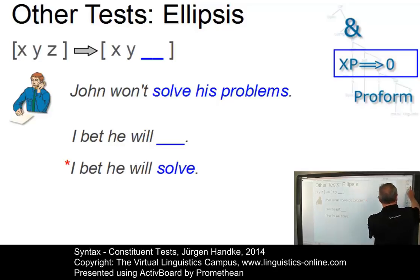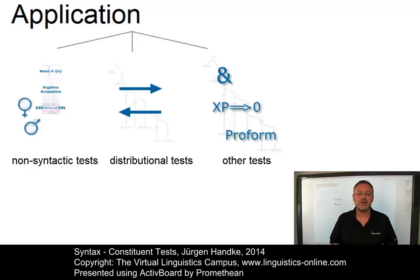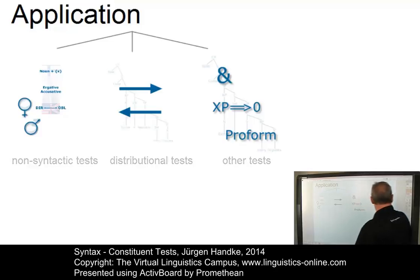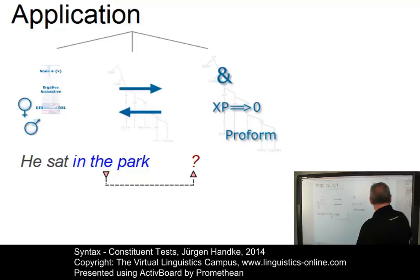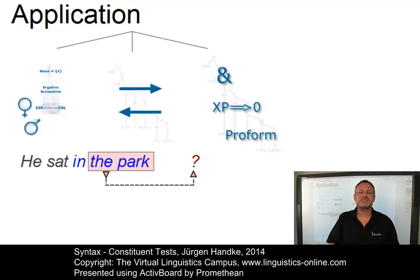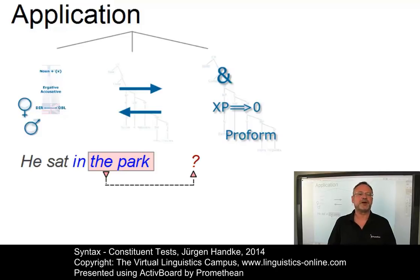Now that we understand how we can find out whether one or several words can be grouped into constituents, and that we have understood that sentences have a hierarchical structure, we can apply these criteria. However, often not all of these criteria apply. For example, if a string of words is already at the end of a sentence — 'he sat in the park' — how can we post-pose it? Or take the item 'the' in 'the park': morphological criteria do not apply since 'the' is neutral with regard to number — 'the park' or 'the parks,' no difference. Nevertheless, there are always some criteria that can nicely help to define the status of constituents.